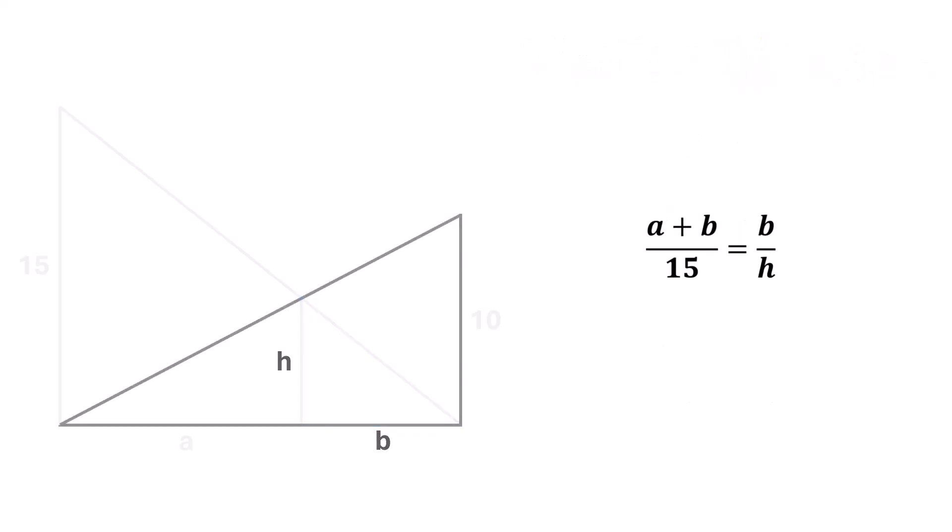Consider this bigger triangle and this smaller triangle. Again, both of them have the same angle, which is this angle, and both are right triangles. Therefore, they are similar triangles. So, the ratio base over height of both the triangles will be equal. So, we will have A plus B over 10 is equal to A over H.